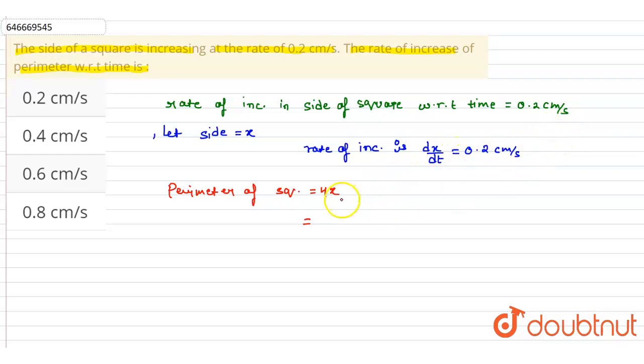So we can write the rate of increase in perimeter is equal to 4 into dx by dt. So it is equal to 4 into 0.2, so it is equal to 0.8 centimeter per second.